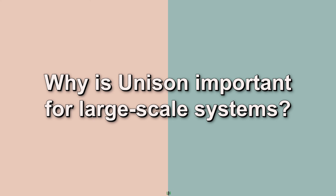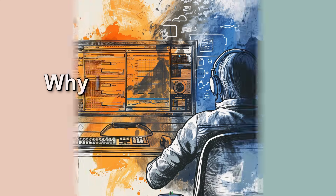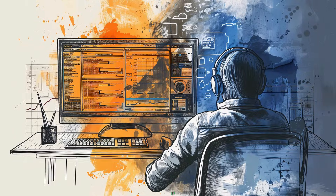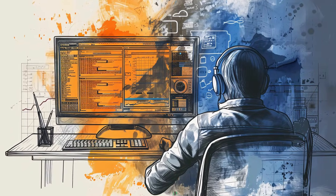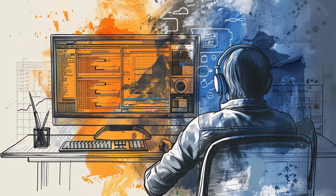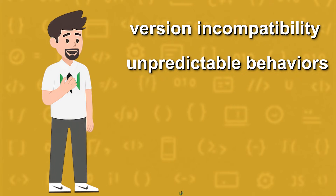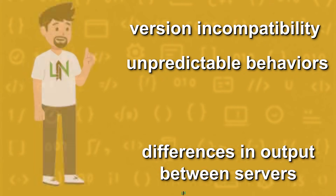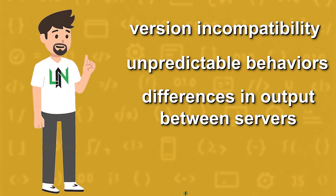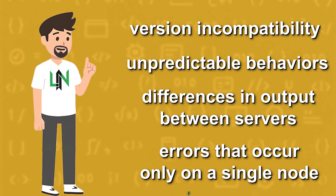Why is Unison important for large-scale systems? Because in large systems, the main problem is not the program logic itself. The real problems are version incompatibility, unpredictable behaviors, differences in output between servers, and errors that occur only on a single node. Unison targets these issues at the root — not with external tools, but with the language itself.